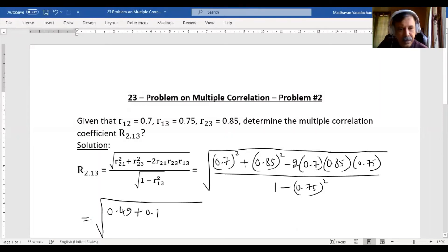...0.7225 minus 2 into 0.7 into 0.85 into 0.75. If we calculate that, we have 0.8925 in the numerator. Then...